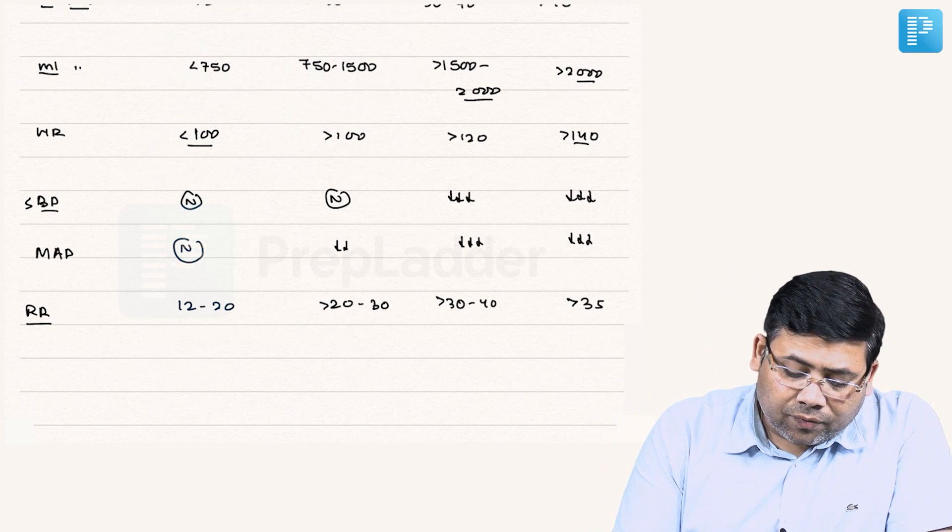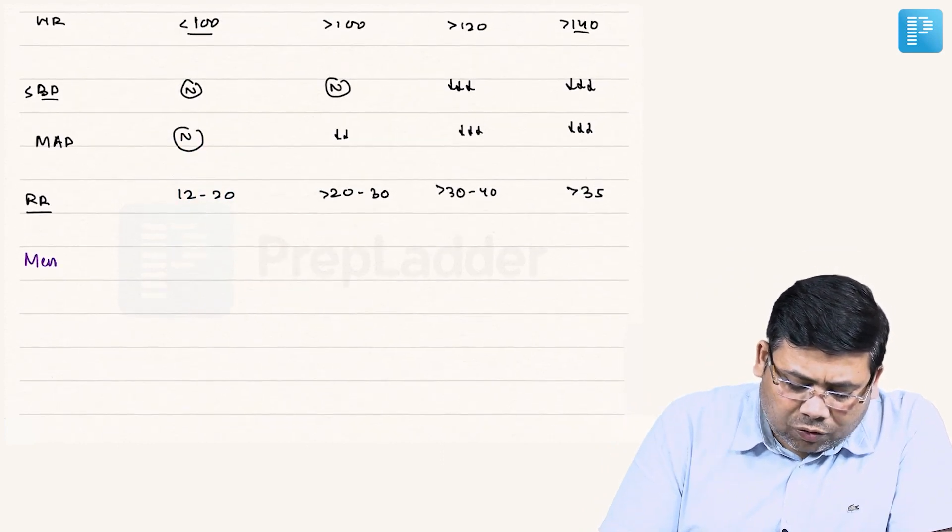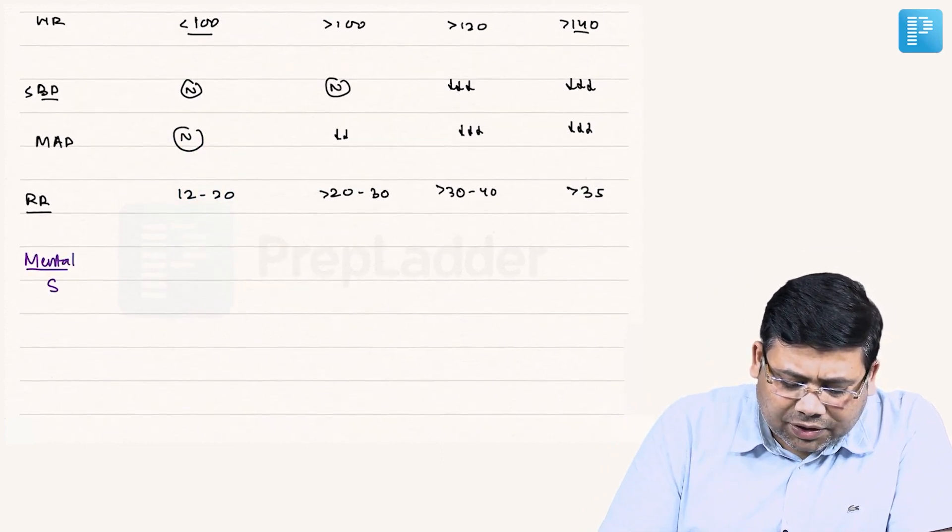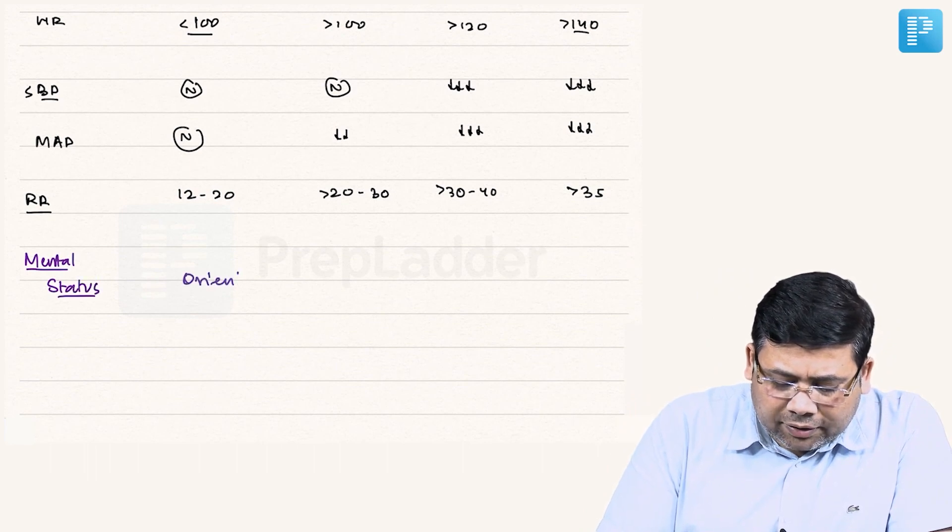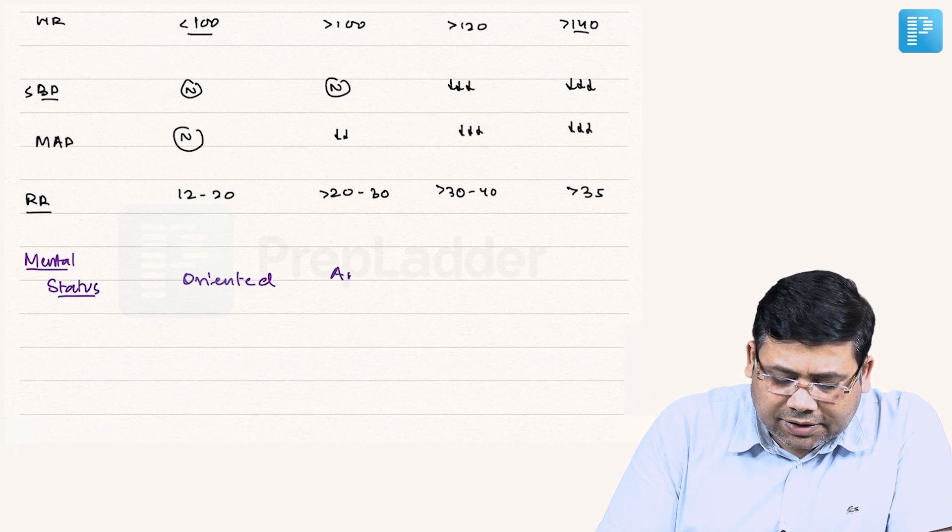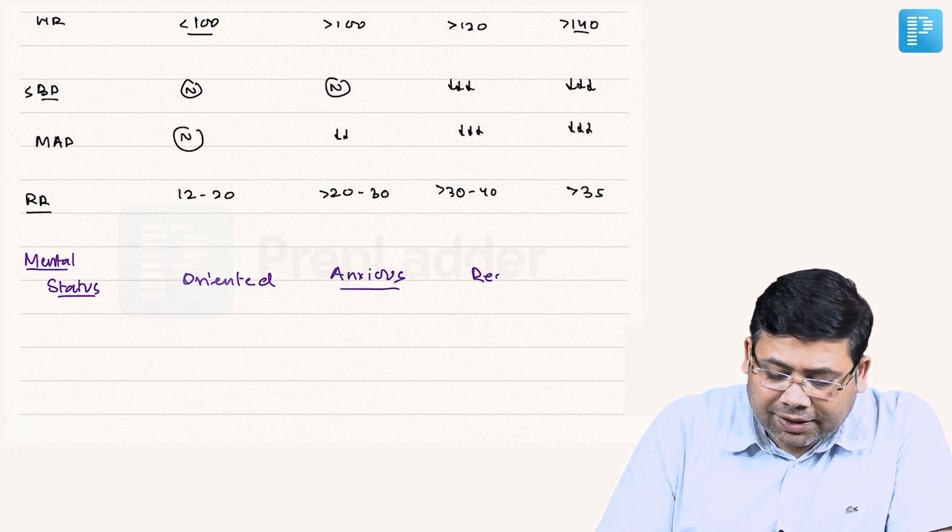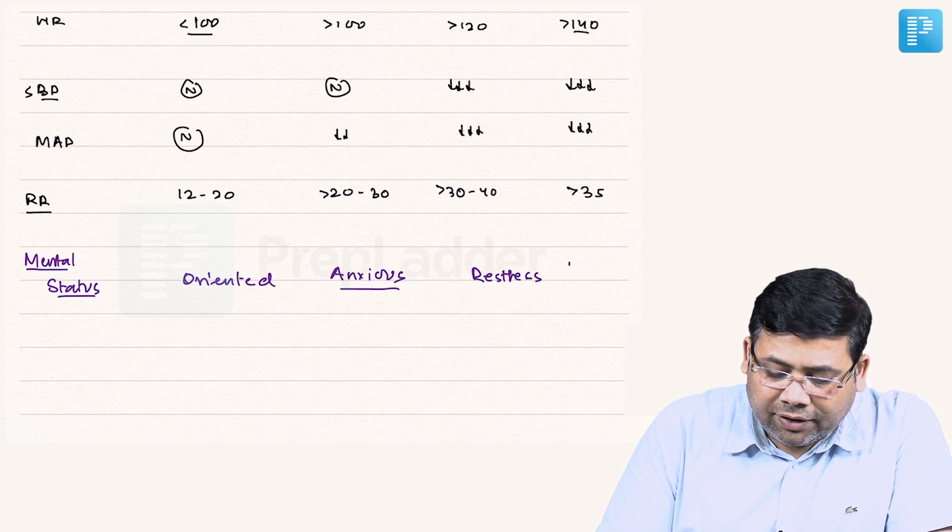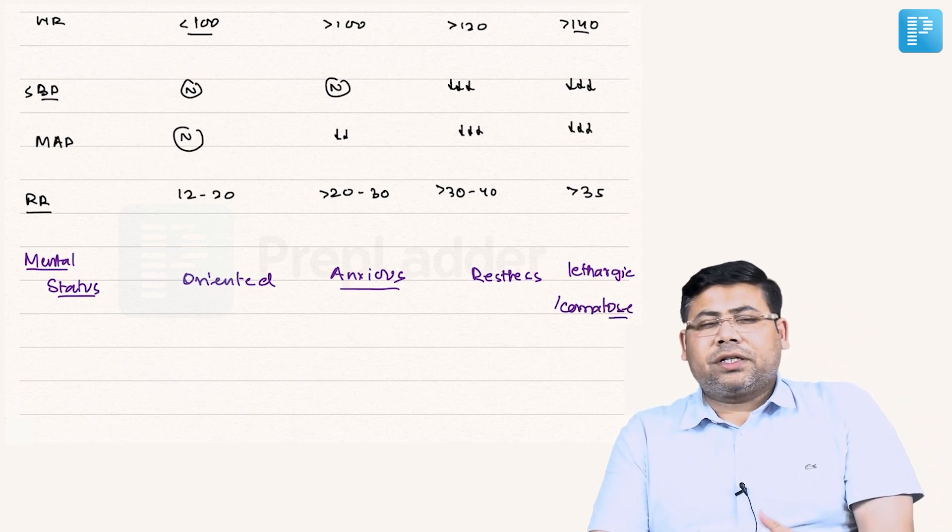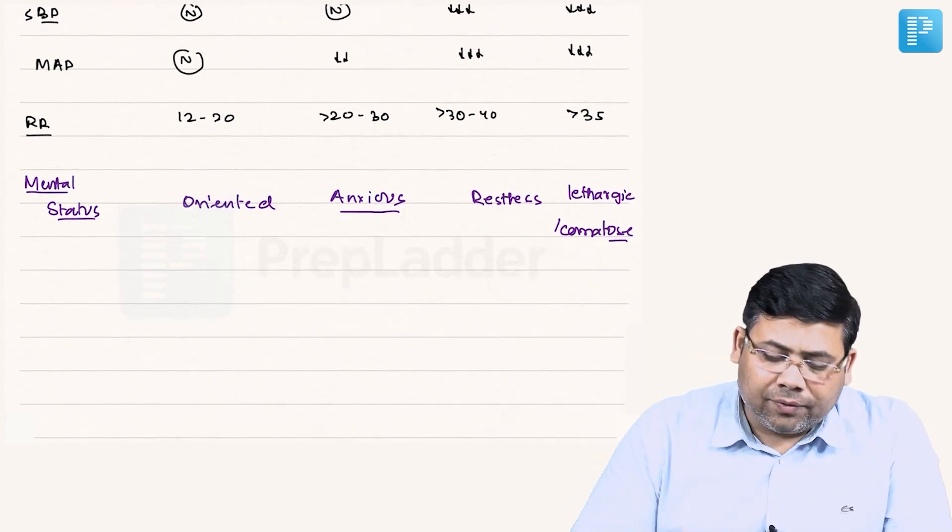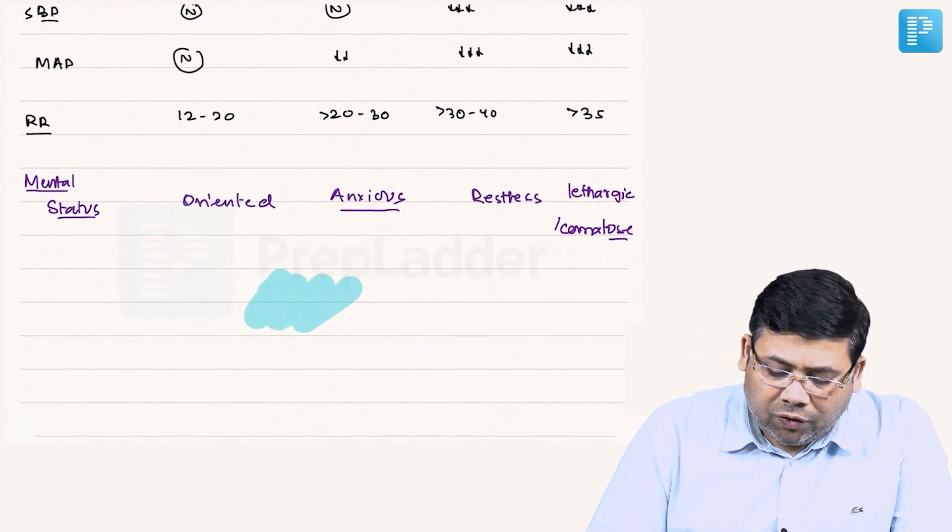Along with that we see the mental status. If we see the mental status: this is oriented, this is anxious, then we have restless, and then we have lethargic or comatose. So there are some features going in favor of four, some features are going in favor of three. Now what is happening in this case? The body will start with its compensatory action.